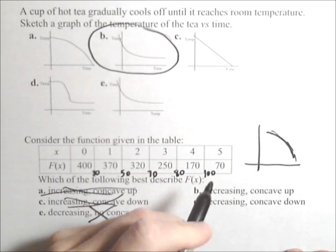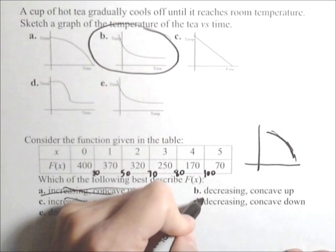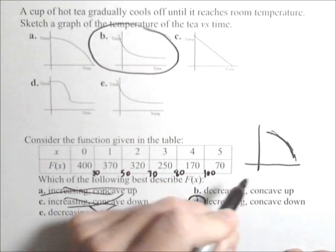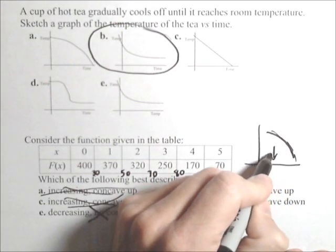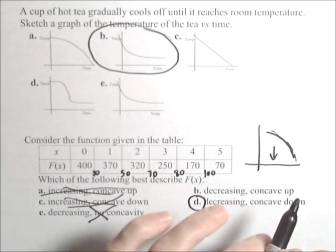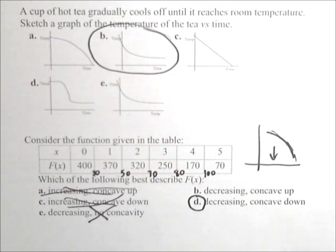So what we have is decreasing and concave down. We can see the concave down from the graph because it opens downwards. And it has a decreasing rate of change.